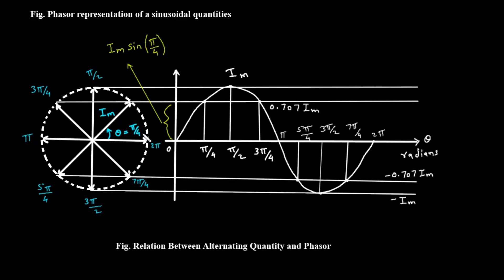On the right side, we have a standard graph of a sine wave. The horizontal axis represents the angle theta in radians, and the vertical axis represents the instantaneous value of the current. Here is the magic: the sine wave on the right is generated by tracking the vertical height of the tip of the rotating phasor on the left. When the phasor is at an angle of 0, pointing straight to the right, its vertical height is 0. And if you look at the sine wave graph, at an angle of 0, the wave's value is also 0.